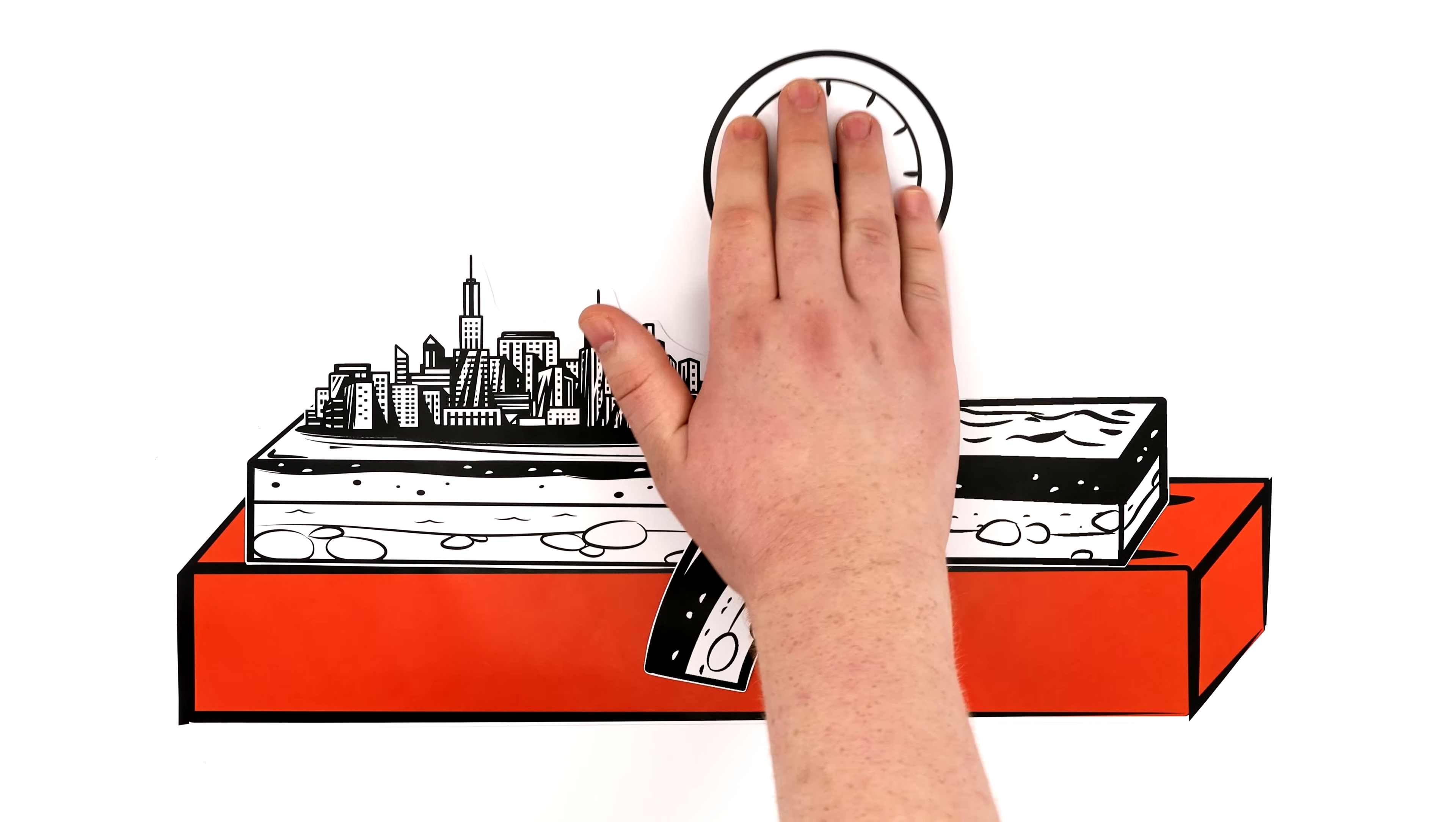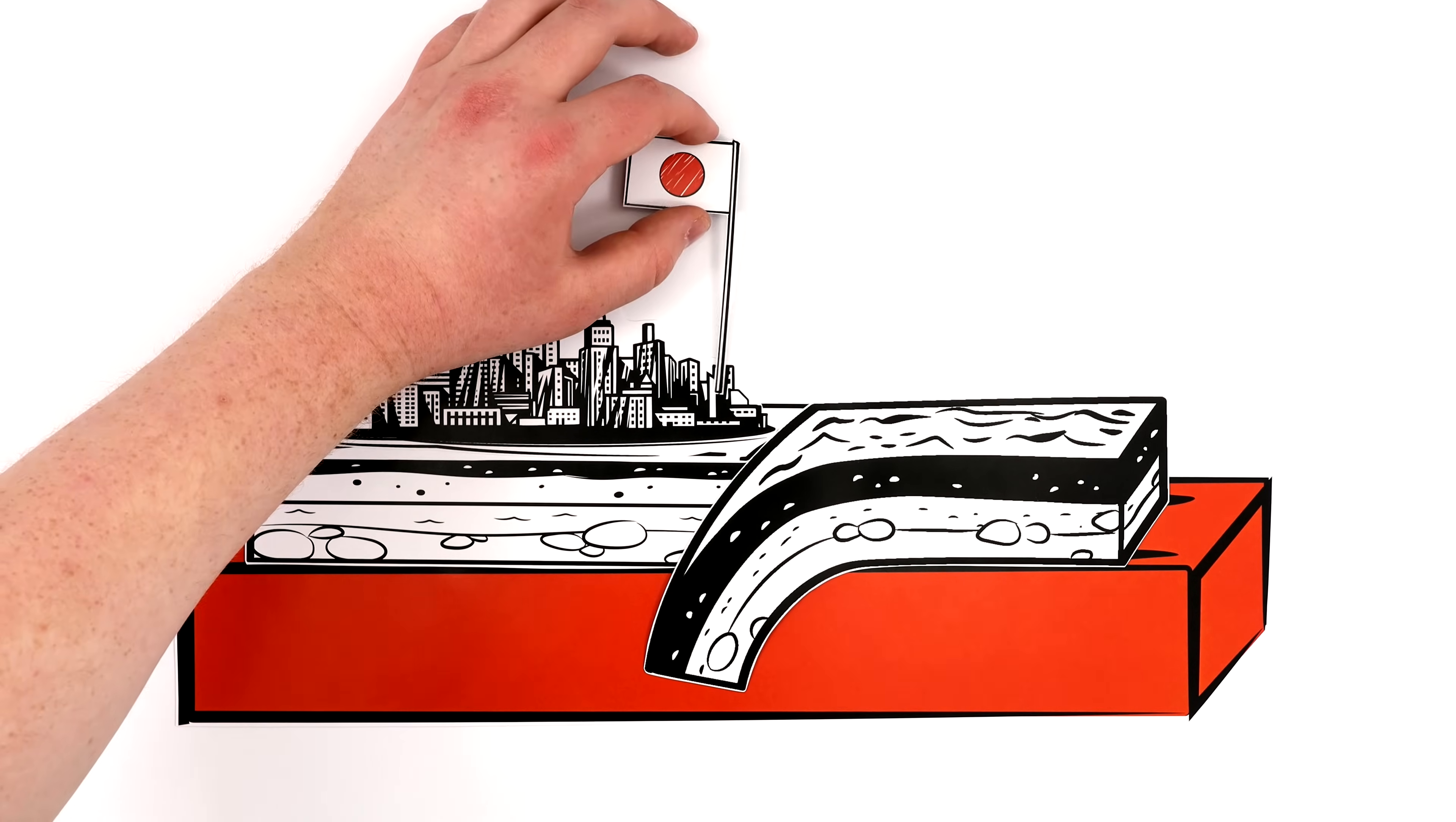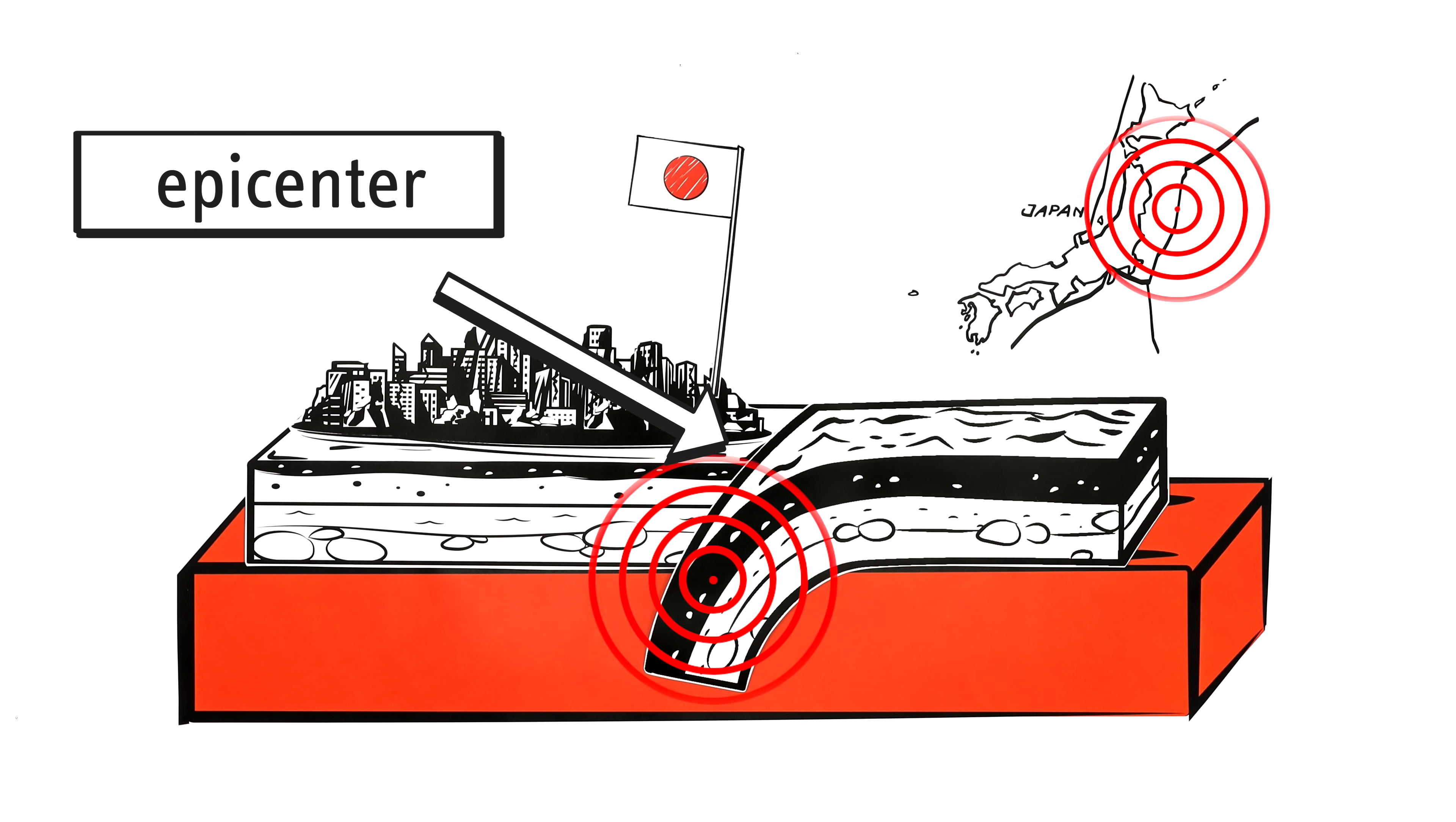This mostly happens along the edges of tectonic plates, like off the Pacific coast of Japan, where four plates meet. With each tremor, destructive forces are released, spreading out like waves from the hypocenter. Right above, on the Earth's surface, is the epicenter. This is usually where the worst damage occurs.